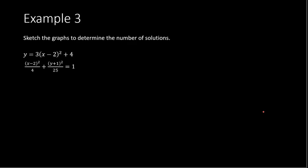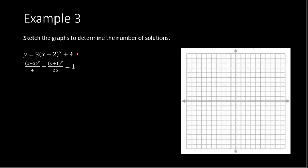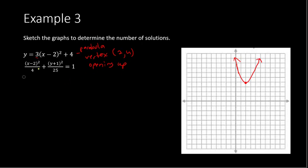Let's try one more example. The first equation is a parabola. The vertex is at (2, 4), found from the negative 2 and positive 4. We know it opens upward because y comes first and the leading coefficient is positive. We plot the vertex to the right 2 and up 4, and sketch the upward-opening parabola.